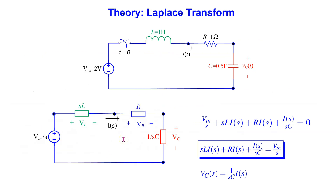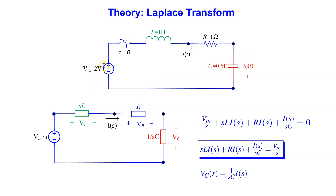Let us now look at how to theoretically determine the step response. We consider an RLC circuit as shown, with a half-farad capacitor, one henry inductor, and one ohm resistor. The applied input DC voltage is 2 volts. We transform this time domain circuit into the S domain.